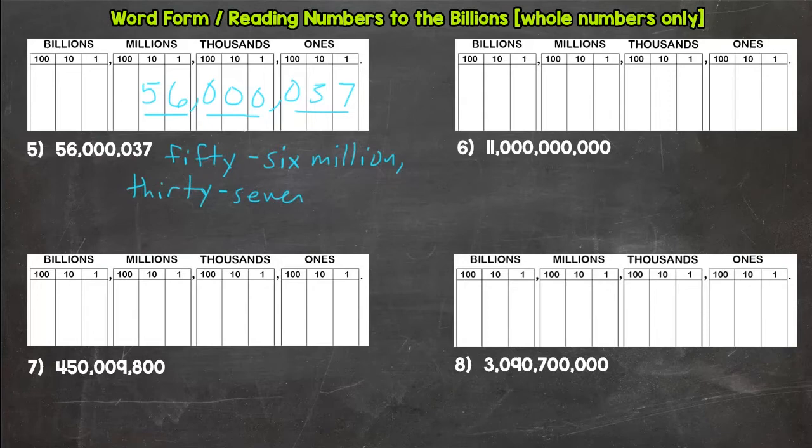All right, let's go to this one. We have a lot of zeros here, so this is also going to be a short one. But we have to make sure we have our numbers in the right periods so we say it correctly. We actually have 11 in the billions. We don't have any ones, we don't have any thousands, we don't have any millions.